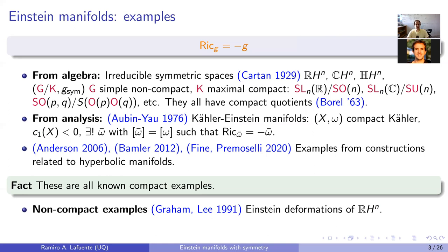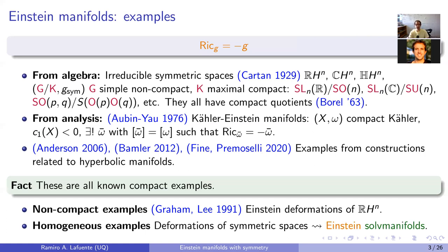On the other hand, non-compact examples are a bit easier to find. There is a very general construction by Graham-Lee where they consider deformations of the hyperbolic metric on hyperbolic n-space, showing that there's an infinite-dimensional family of Einstein deformations. More relevant to what we'll be discussing is that one can also consider Einstein deformations of symmetric spaces.